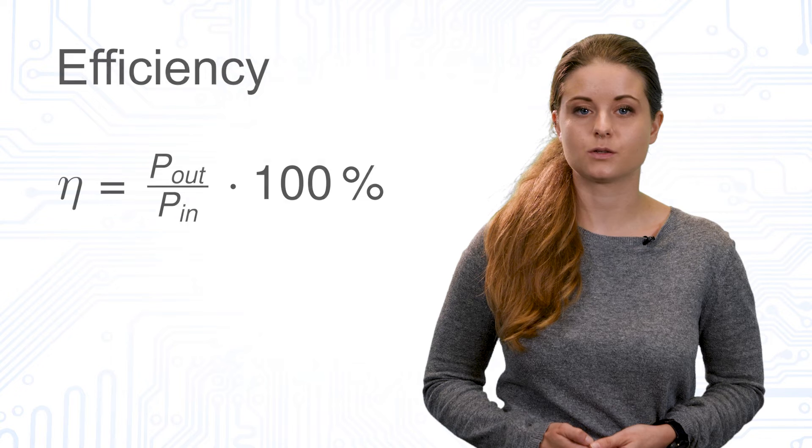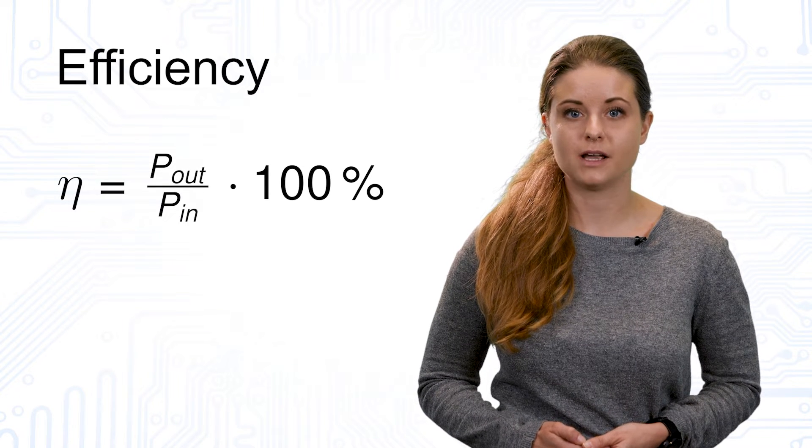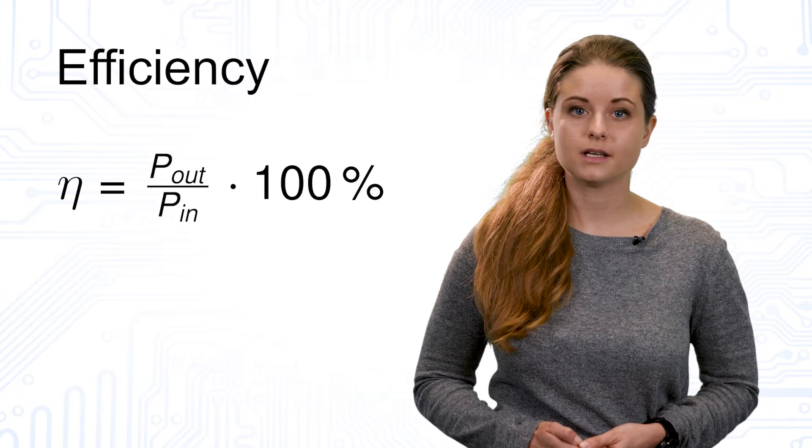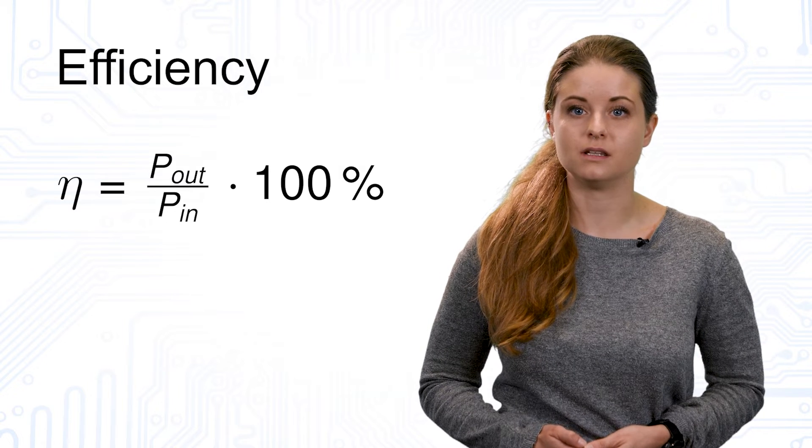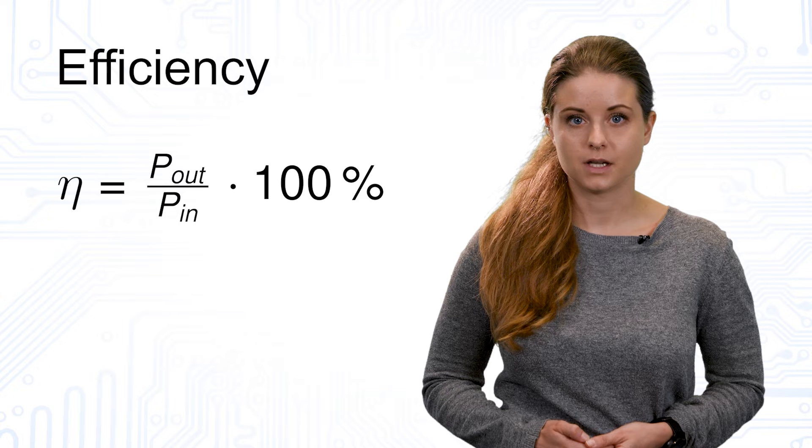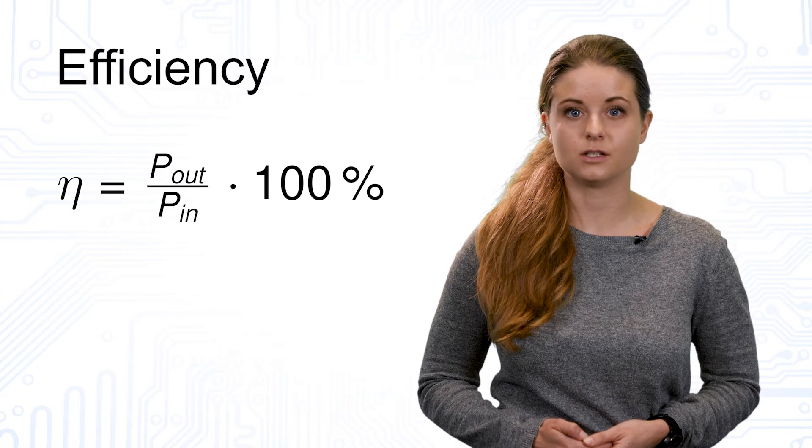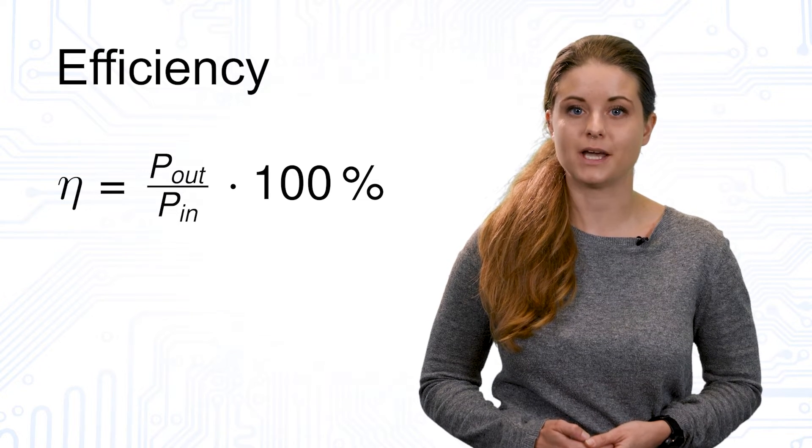The efficiency describes how much of the power of the input of the power supply remains at the output, so η is P_out related to P_in. The efficiency is expressed in percentages. The higher the efficiency, the better, as low efficiency describes losses which are dissipated as heat.